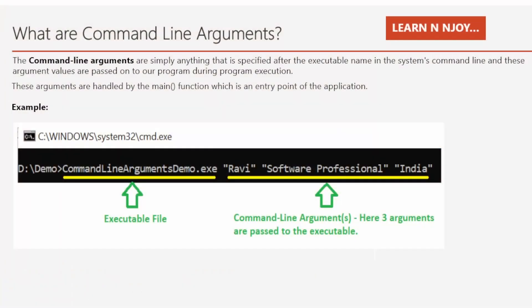What are command line arguments? The command line argument is simply anything that is specified after the executable name in the system command line, and these argument values are passed on to our program during program execution. These arguments are handled by the main function, which is the entry point of the application.